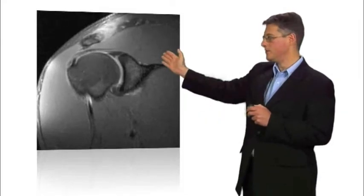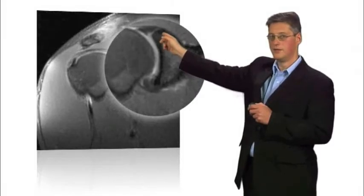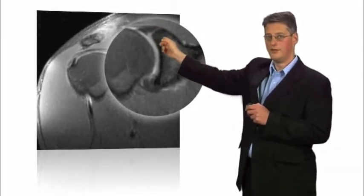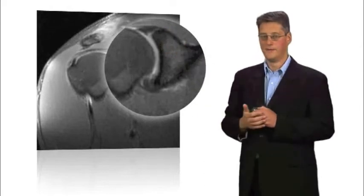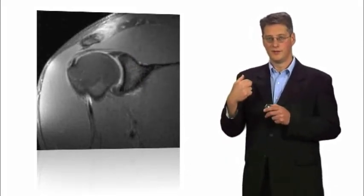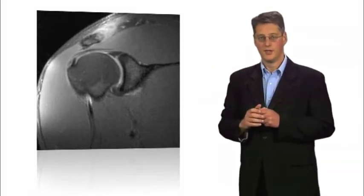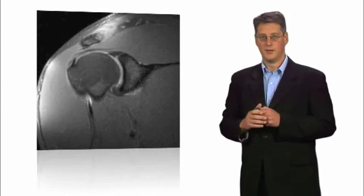Here you see an image of an MR arthrogram with a SLAP tear right at the top here in this triangular area where you see some dye running up here. The arthrogram is a procedure where dye is injected into the shoulder and then images are taken of the shoulder on a CT or an MR scan.